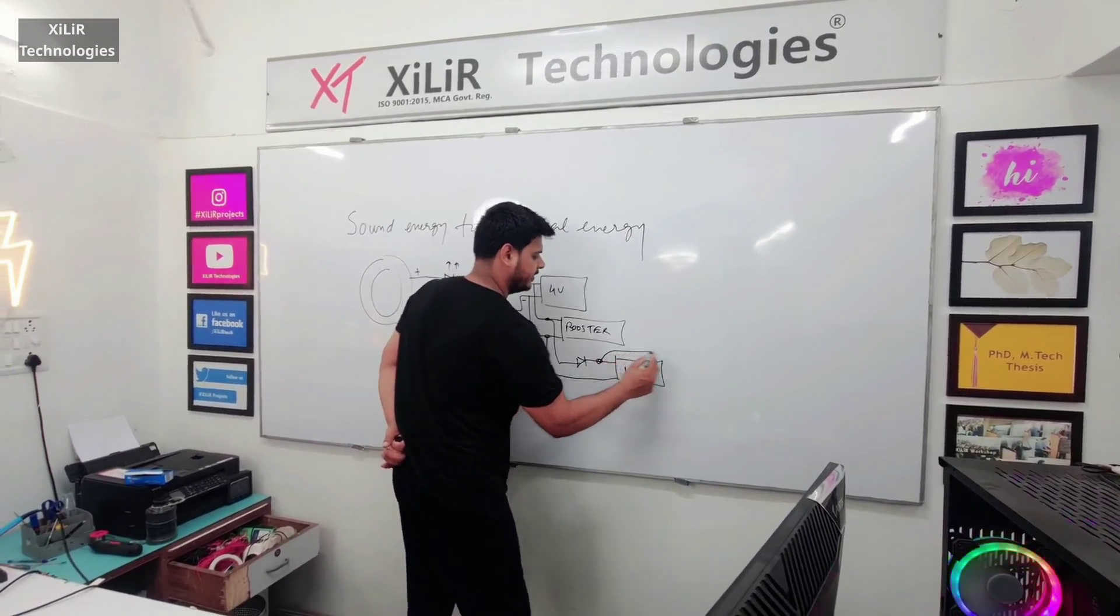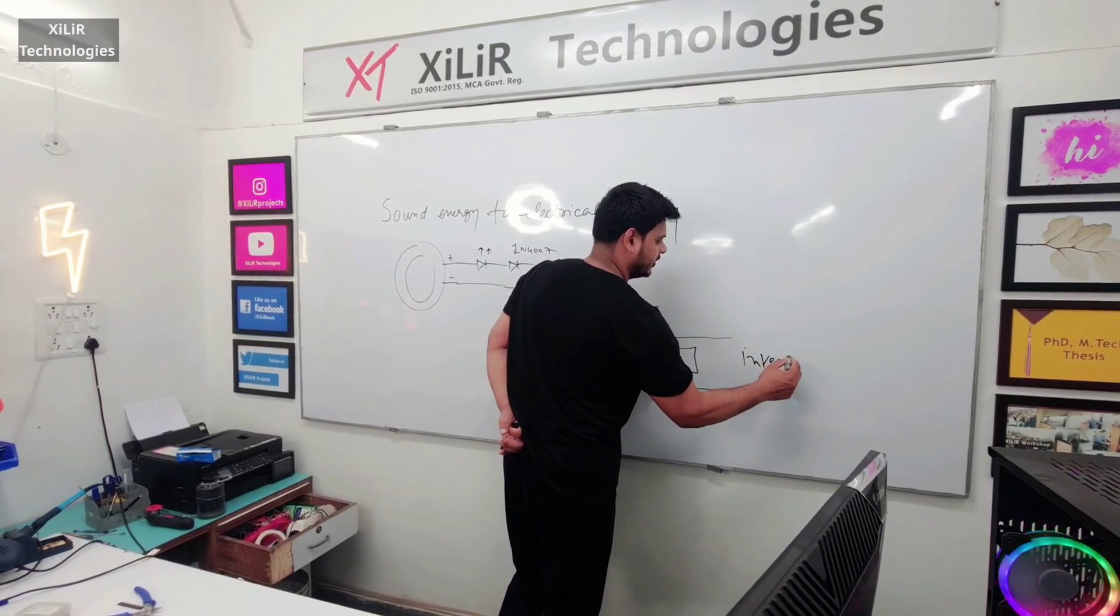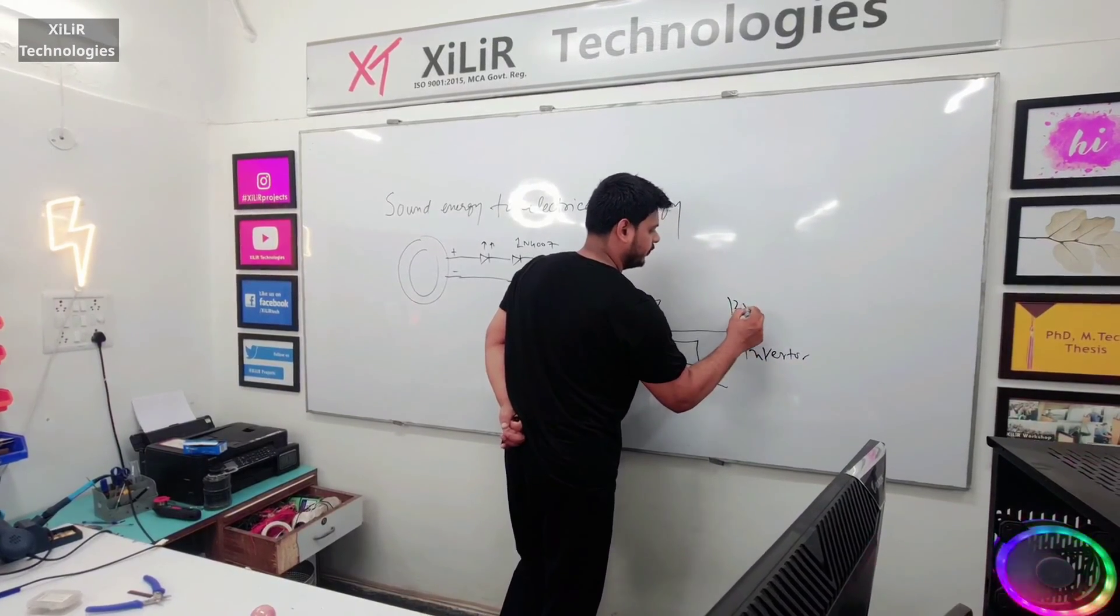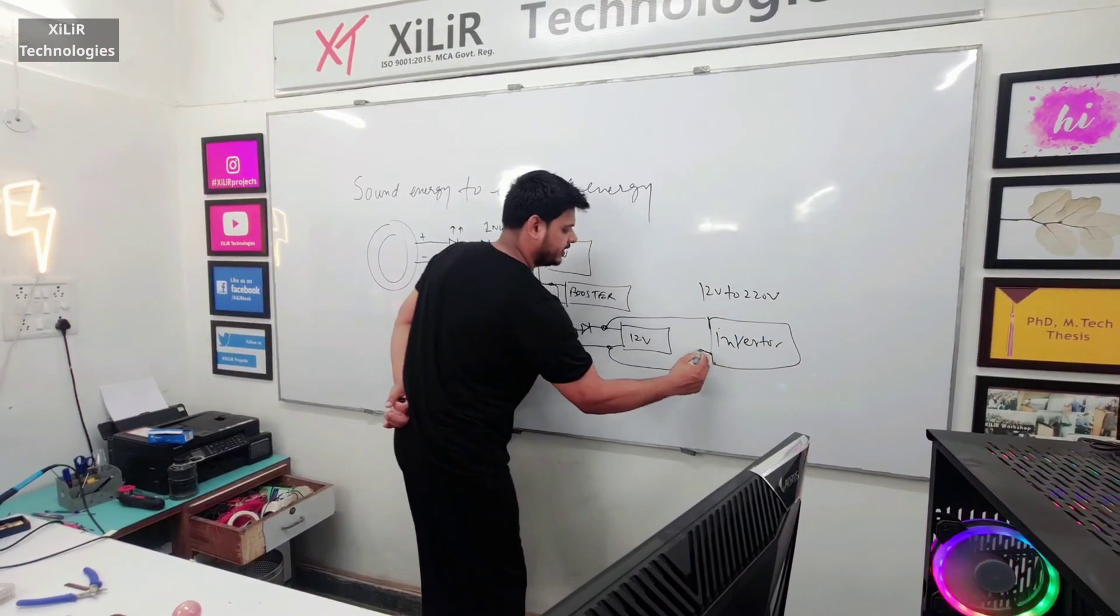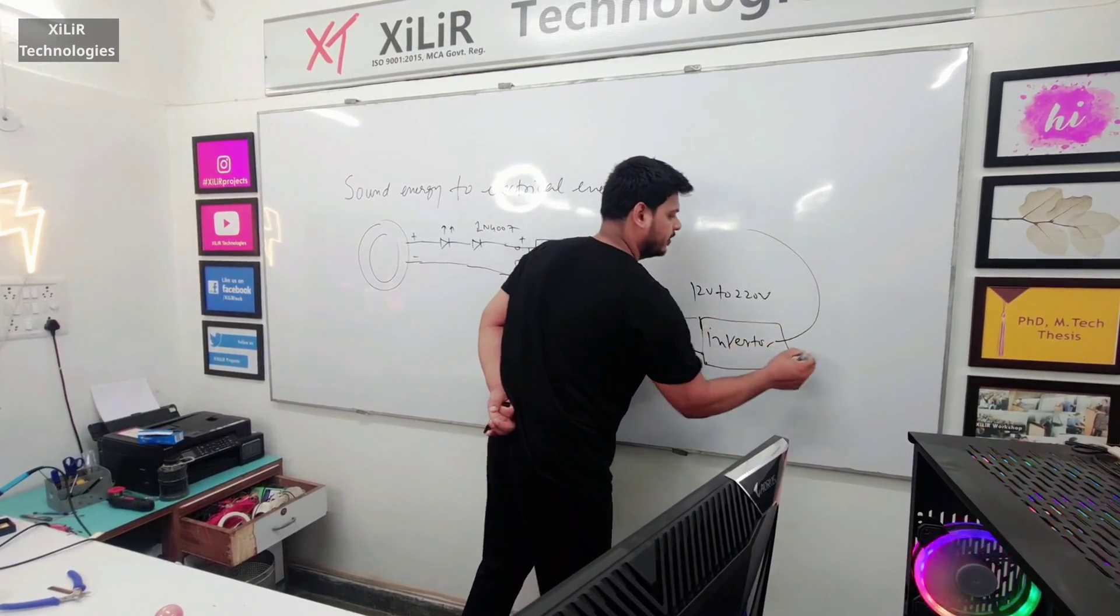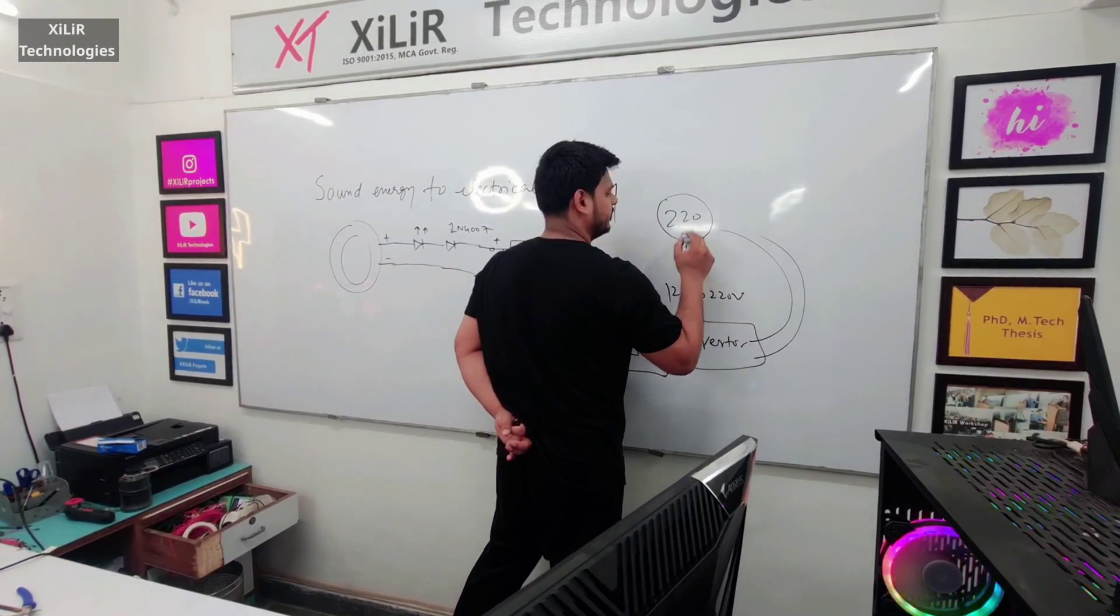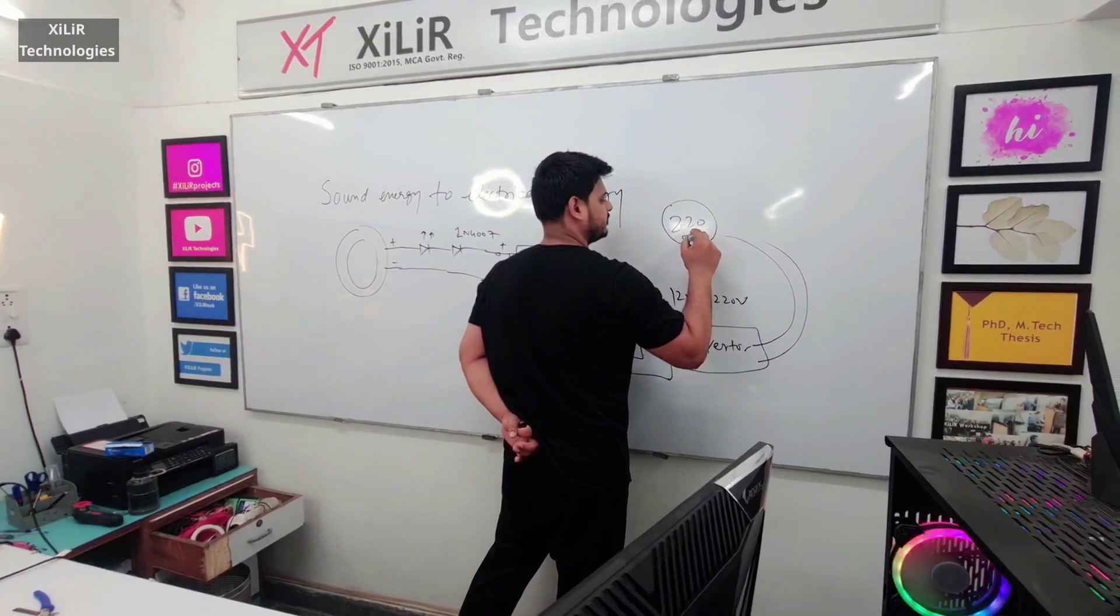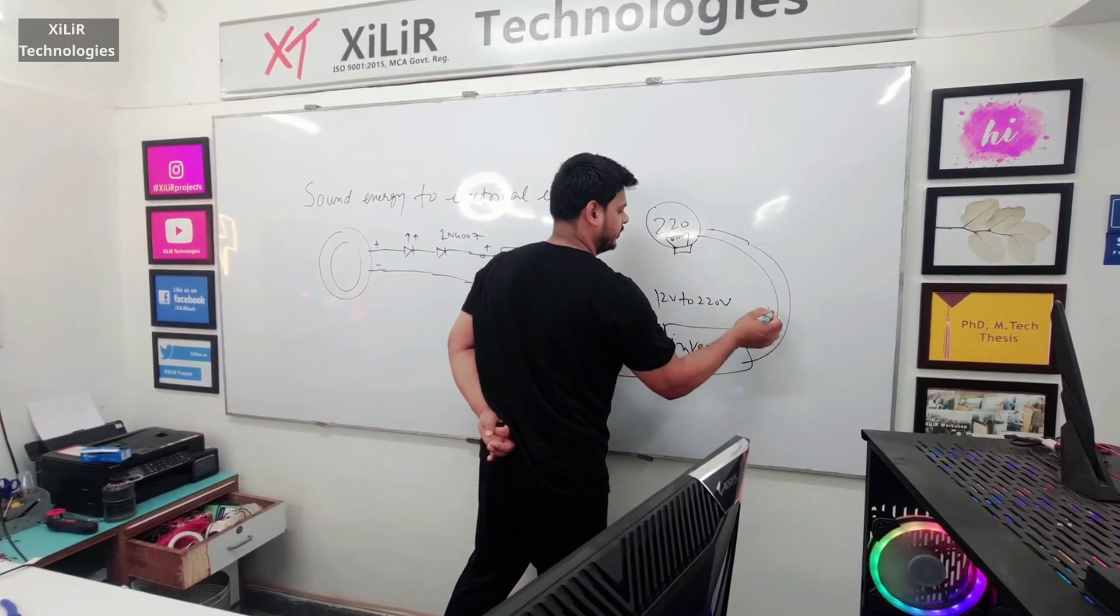And this battery is again given to one inverter which is 12V to 220V inverter. After that we are using here 220V bulb on some point we have switching.